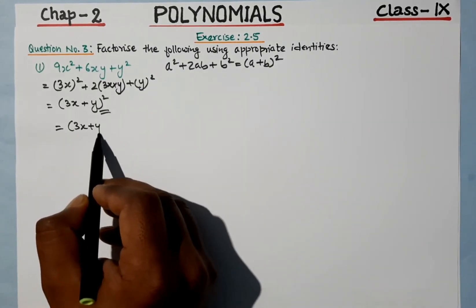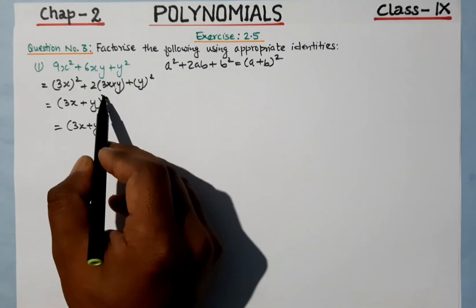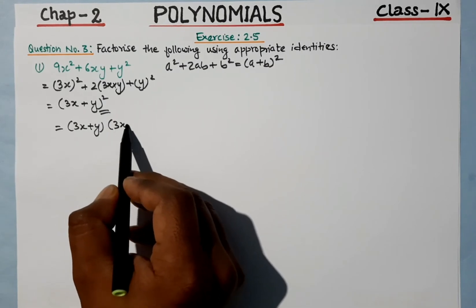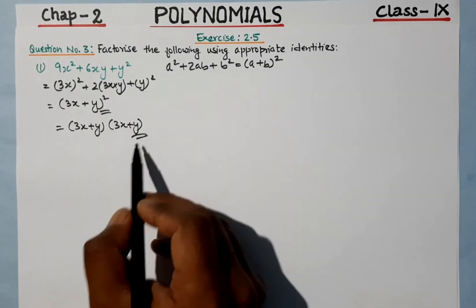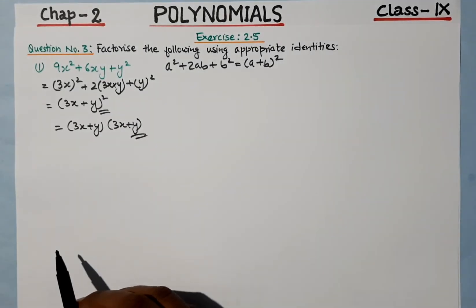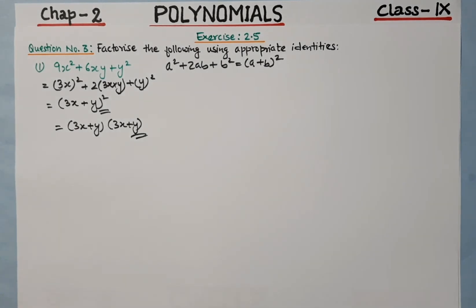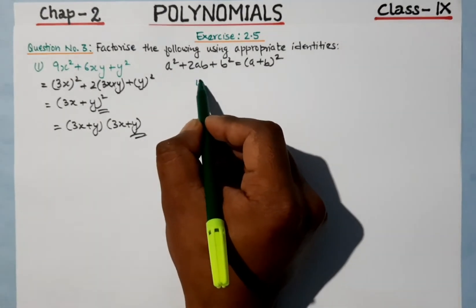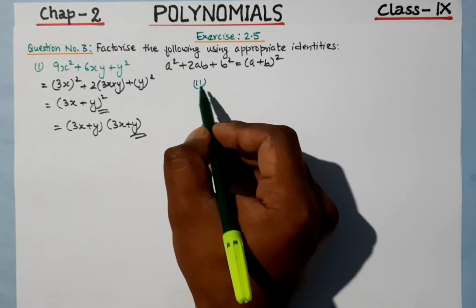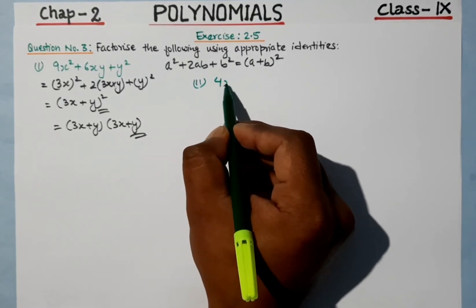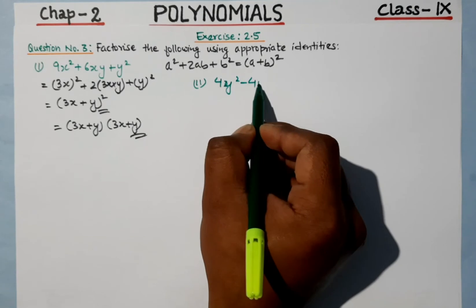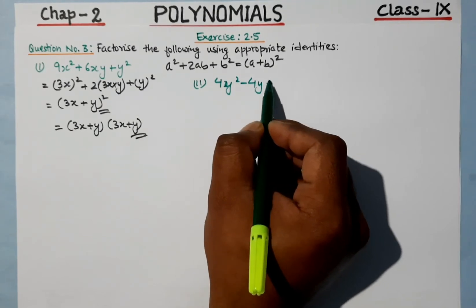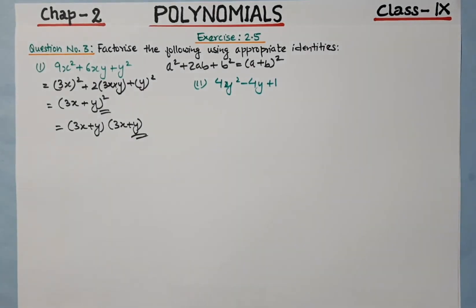So (3x + y)² means (3x + y)(3x + y). That is our first question done. Now let's move to question number 2: 4y² minus 4y plus 1.